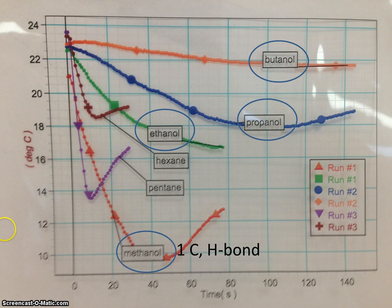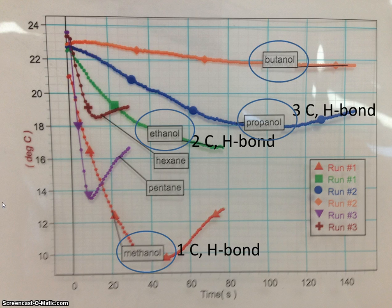You know that methanol has one carbon and would exhibit hydrogen bonding. Ethanol has two carbons and would also exhibit hydrogen bonding. Propanol has three carbons and hydrogen bonding, and butanol has four carbons and hydrogen bonding.